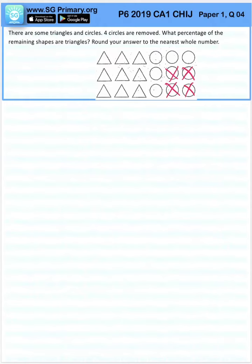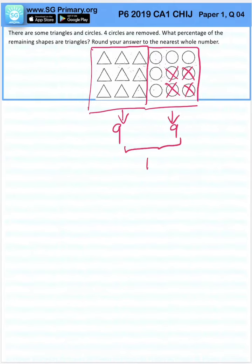So let's start with the number of triangles first. It starts with 9. The number of circles also starts with 9. The total number of shapes is 18.